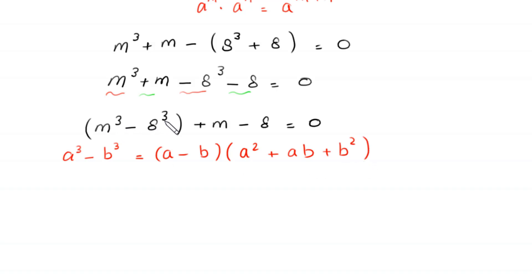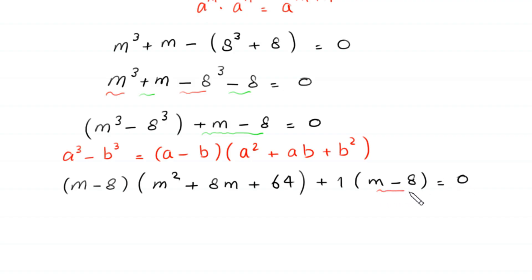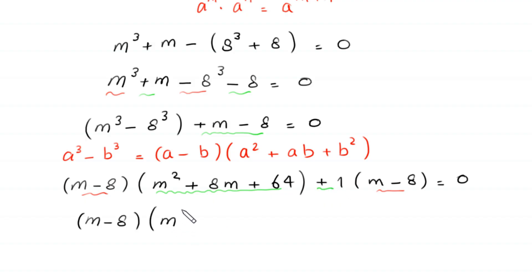Applying the identity, m³ - 8³ becomes (m - 8)(m² + 8m + 64). From the term (m - 8), we factor out 1, leaving (m - 8) as a common factor. Factoring it out gives (m - 8)(m² + 8m + 64 + 1) = 0.